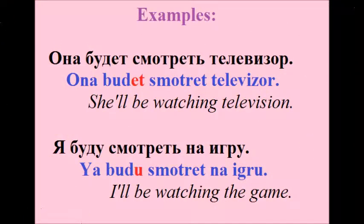As you can see, the future tense consists of two verbs and only the first one changes — it is the verb 'to be' that we have studied already. The second verb смотреть doesn't change; we just use its infinitive form. For example: Она будет смотреть телевизор. Я буду смотреть на игру.